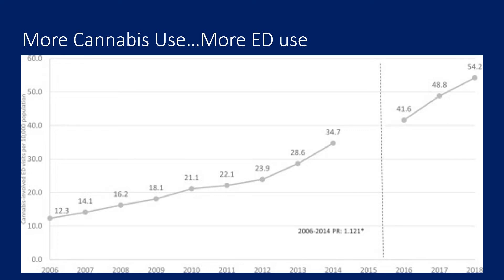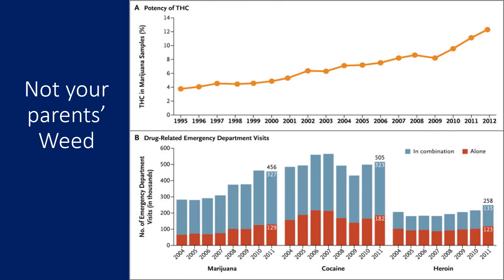With legalization of cannabis — and a lot of this data comes from Colorado — ER visits continue to go up for marijuana-related issues. One of the reasons driving this is that the marijuana out there today is not the weed your parents smoked. The percentage of THC, which is the psychoactive component, is steadily going up. Back in the 90s, THC percentage was 2% to 4%. We're now looking at 10% to 12% in regular THC, but there are also edibles with up to 50% THC and marijuana butters and products like shatter, which have close to 100% THC. So the relative potency of marijuana has gone up significantly, and marijuana-related ED visits are increasing.